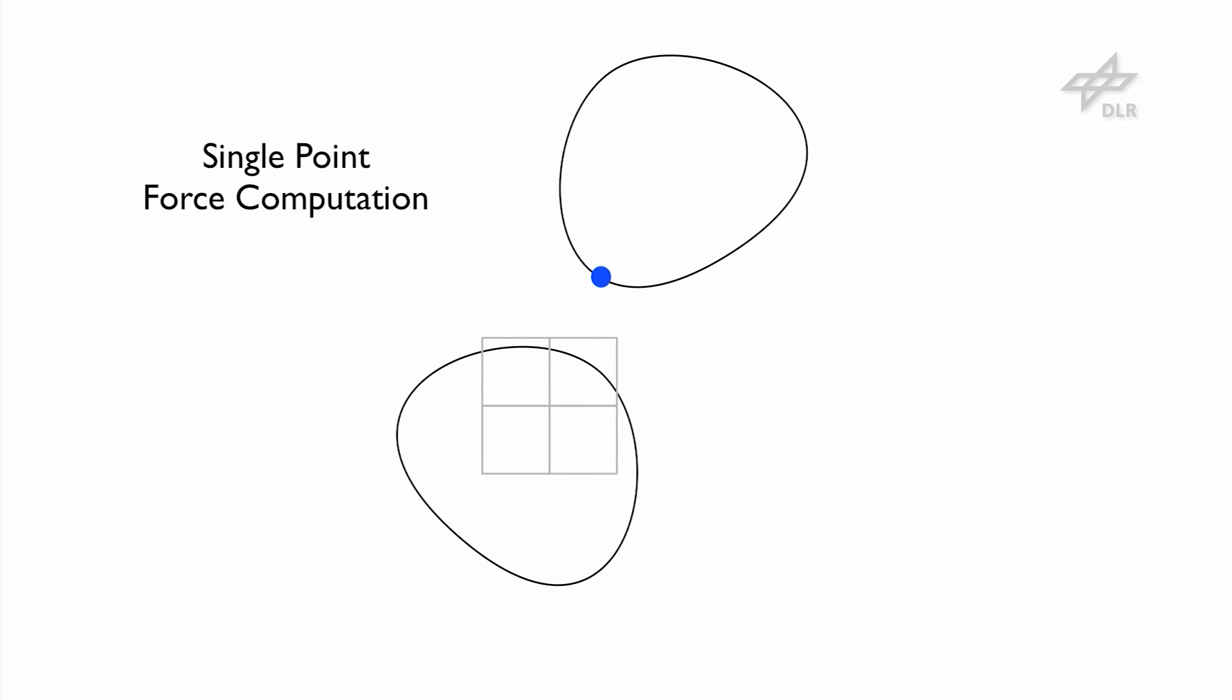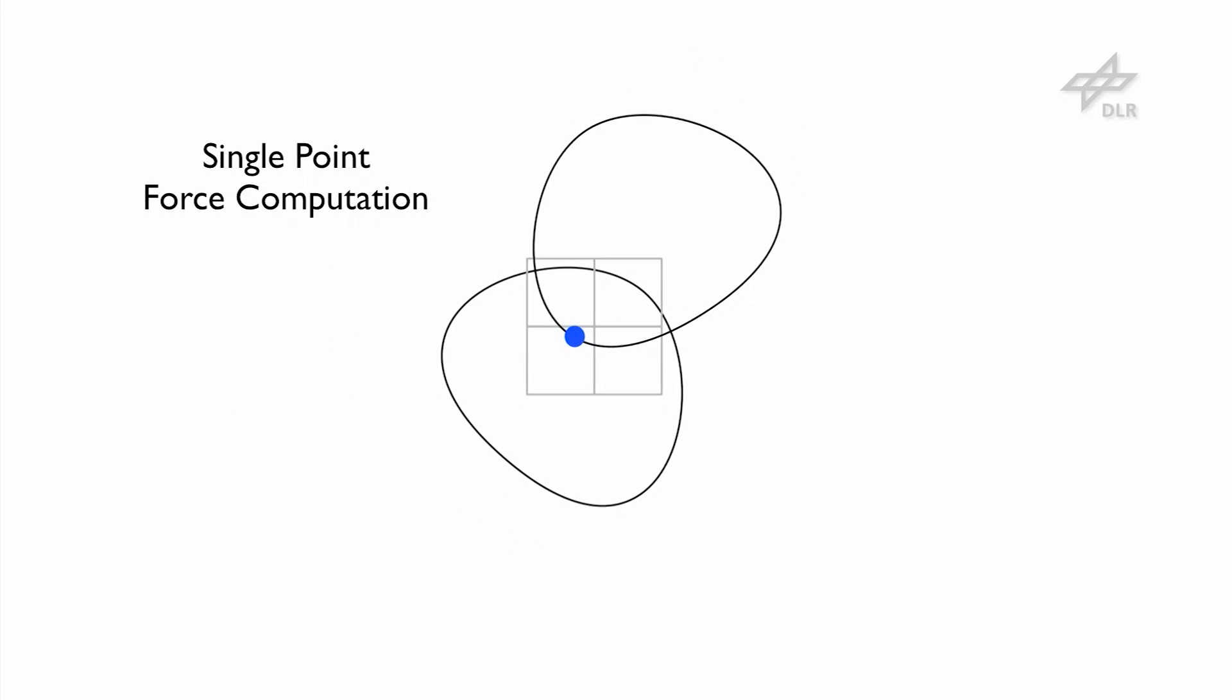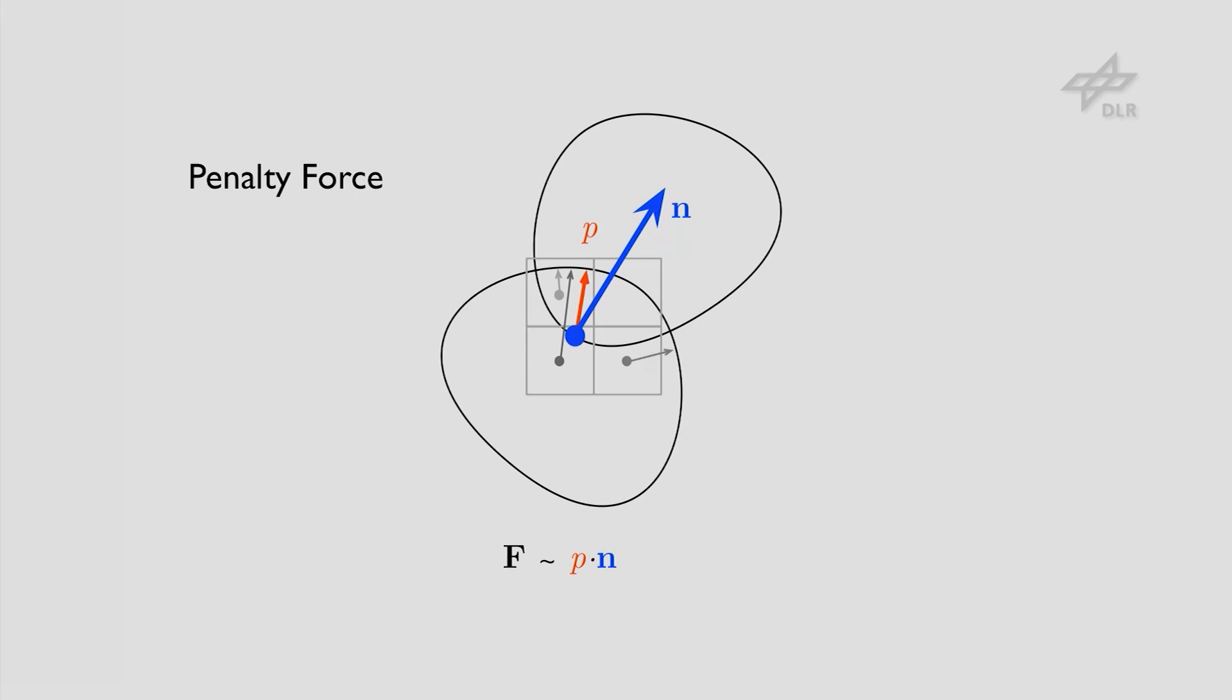The collision force computation is penalty-based. Whenever a point shell point is detected to be inside a solid voxel, the stored scalar penetration values of its voxel neighbors are read and interpolated to obtain the penetration of the point. This scalar penetration multiplied by the point normal yields a single force. The sum of all single forces yield a total collision force.